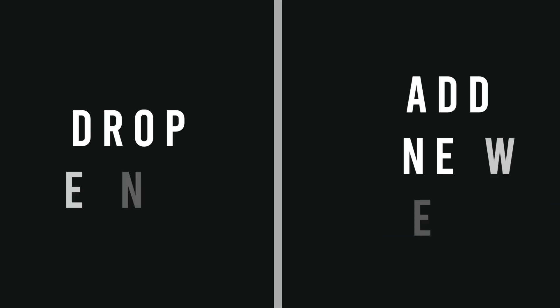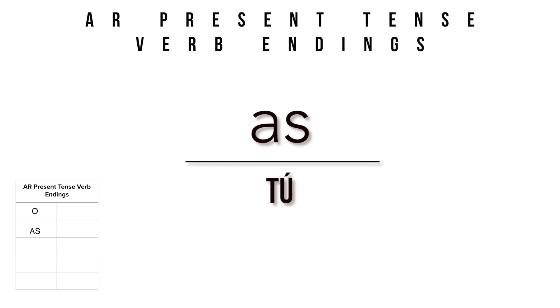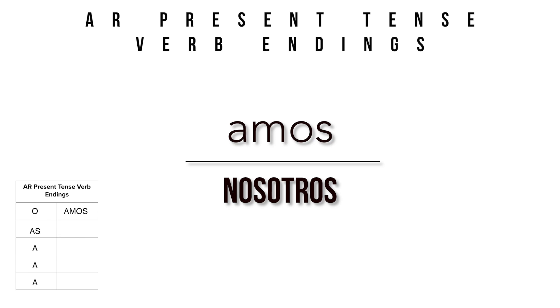For AR verbs: if your subject is yo, the ending is O. If your subject is tú, the ending is AS. El, ella, and usted all share the ending A. Nosotros gets AMOS. Vosotros gets ÁIS — that A gets an accent mark. And ellos, ellas, and ustedes all share the ending AN. Note that el, ella, and usted sharing an ending can be confusing, so it's best to use subject pronouns when talking about multiple people.